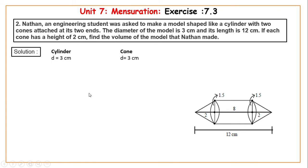The radius is 1.5 centimeters. The height of the cone is 2 centimeters. The cone height is h2 and h1. The total height of both cones is 2 centimeters each. The cylinder height is 12 minus 2 minus 2, which equals 8 centimeters. The height h1 is the cylinder height.